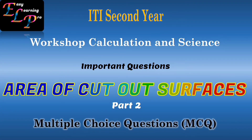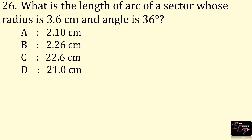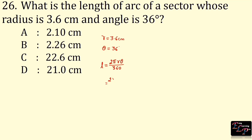Important questions on area of cutout surfaces. What is the length of arc of a sector whose radius is 3.6 cm and angle is 36 degrees? Radius is 3.6 cm and angle θ is 36 degrees. The arc length is given by 2πrθ divided by 360: 2 × 3.14 × 3.6 × 36 ÷ 360 = 2.26 cm. The answer is option B, 2.26 cm.